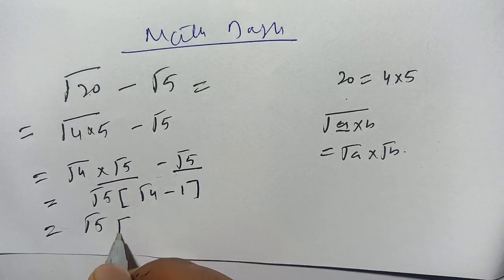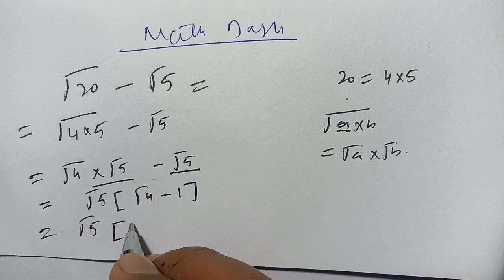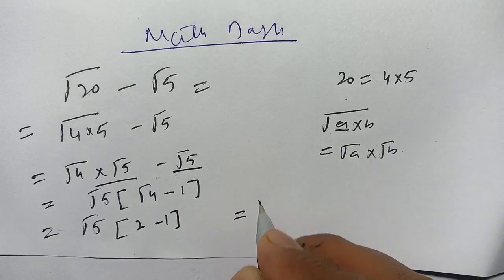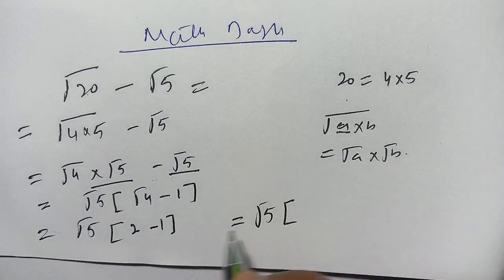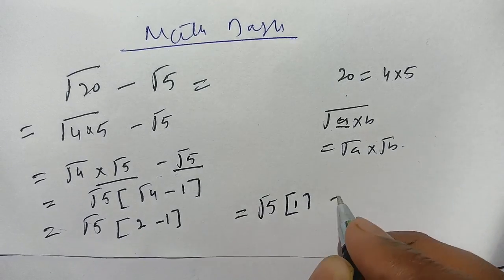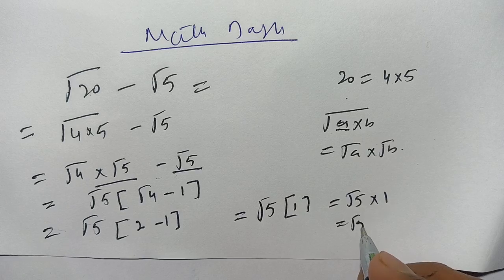We have square root of 5 into square root of 4, which becomes 2. We get 2 minus 1 is equal to square root of 5 times 2 minus 1, which becomes 1. We get square root of 5 times 1 is equal to square root of 5.